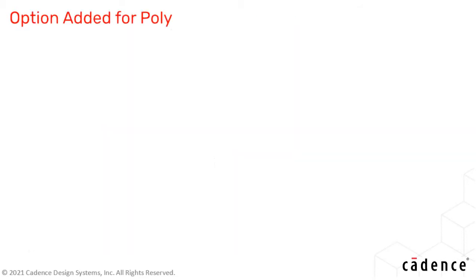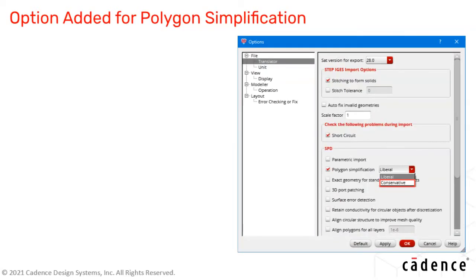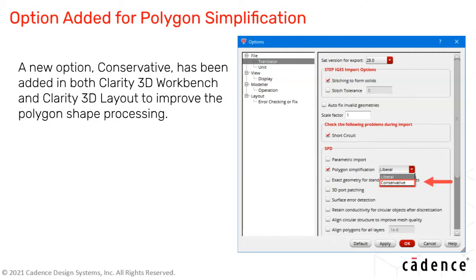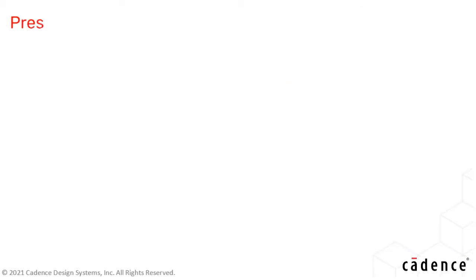A new option, Conservative, has been added in both Clarity 3D Workbench and Clarity 3D Layout to improve polygon shape processing. When you import an SPD file, the quality of imported geometries might not be as expected. You can use the Conservative option to improve quality — shape processing is less aggressive on the imported SPD file, and the gap between the signal trace and GND is well maintained.